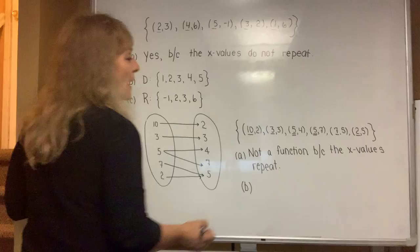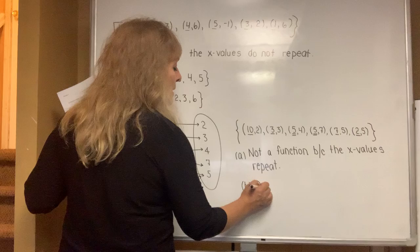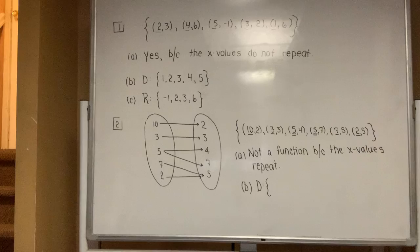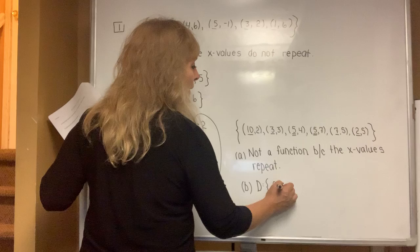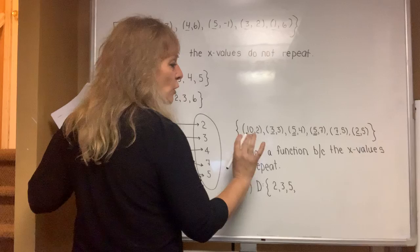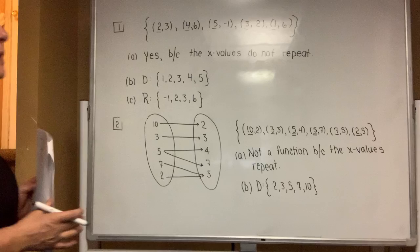Okay, part B says, what is the domain? When you're going for the domain, you list the x values in order from smallest to largest, but you do not do any repeats. So the smallest x value is 2, and then I see a 3. I see a 5, and even though it's written twice, you only write it once when you're listing the domain. I see a 7 and a 10. Those are the elements of the domain.